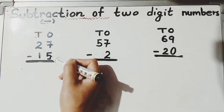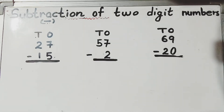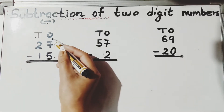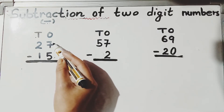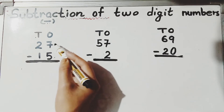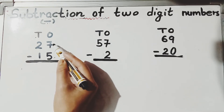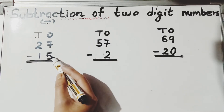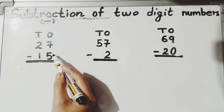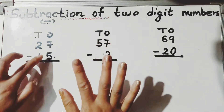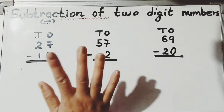We'll subtract by backward count. Look here — in the ones place we have seven and five. Seven is the bigger number and five is the smaller number. You have to keep the bigger number in your mind and open fingers for the smaller number. Keep seven in your mind and open five fingers, because five is smaller.